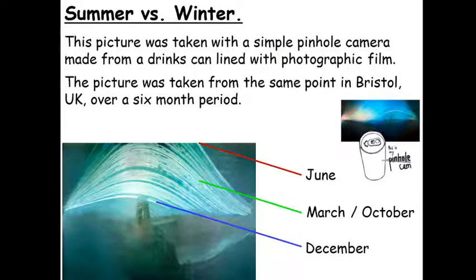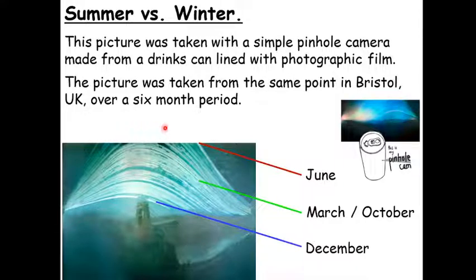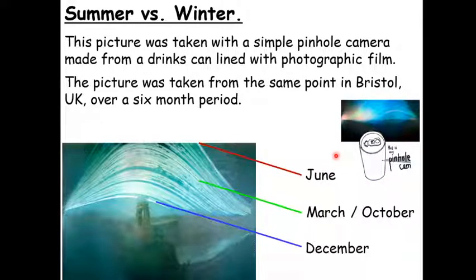Hopefully you've had a chance to think about the differences between summer and winter and we'll come back to that list a little bit later. The picture on the right-hand side was actually taken using a pinhole camera made out of a drinks can and a piece of photographic film. If you've done the light topic you might have had a go at making a pinhole camera yourself.